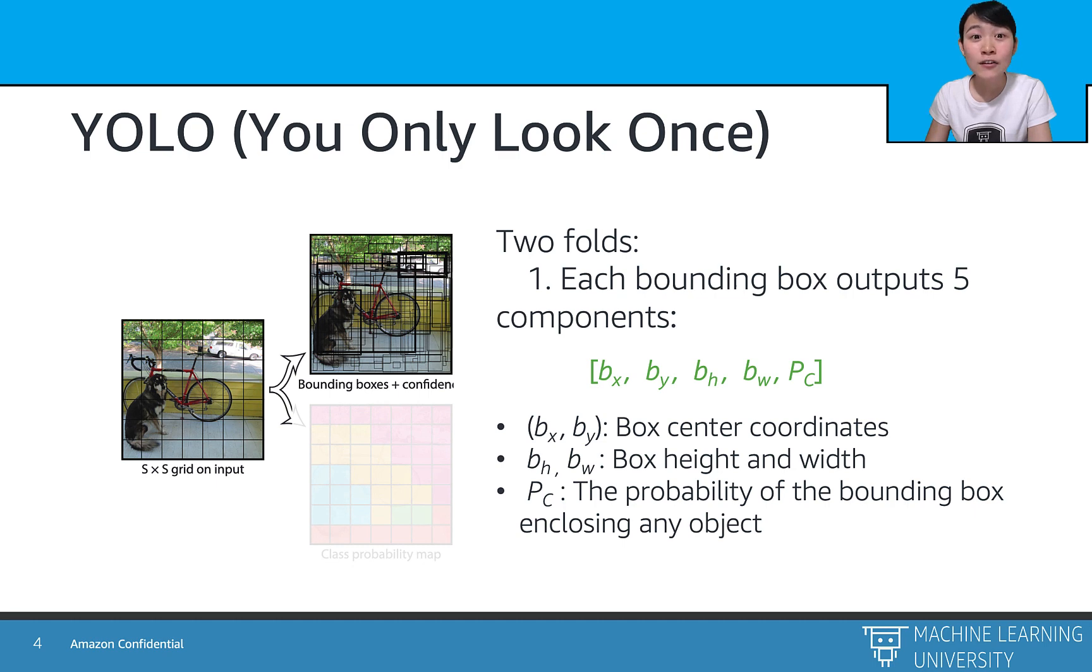Besides, YOLO also outputs the confidence probability, pc, which means if there is an object enclosing in this bounding box.